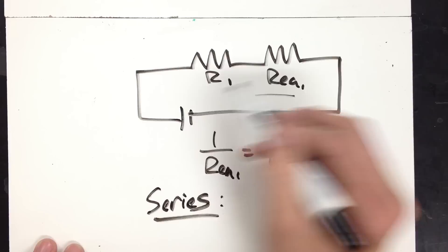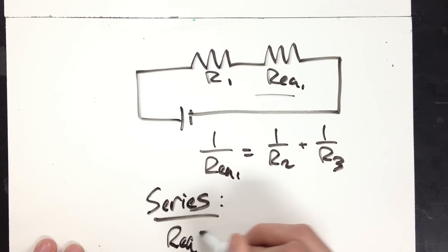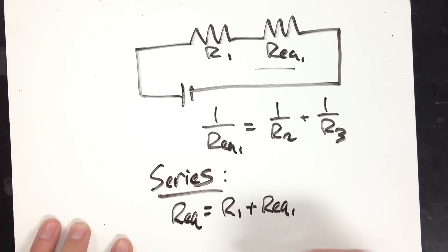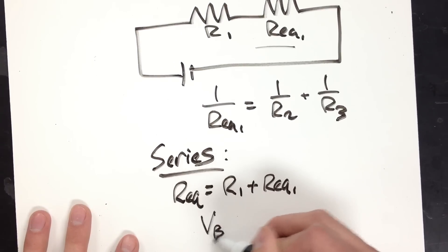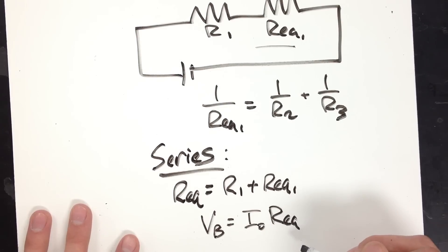So now you have two series resistors. So the total equivalent resistance for this circuit would be R1 plus REQ1, which you could use to solve for the initial current out of the battery.